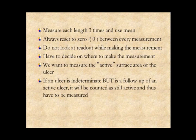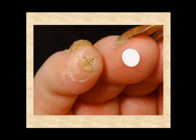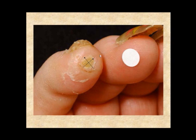Measure each length three times and use the mean of the measurements. Always reset to zero between each measurement. Do not look at the readout while making the measurements. You have to decide where to make the measurement — what we want to do is measure the active surface area of the ulcer. If the ulcer is indeterminate but is a follow-up of an active ulcer, in most studies it will still be counted as an active ulcer until it has healed, and thus has to be measured. So for an indeterminate ulcer with depth but covered with crust, you measure from one end of the crust surface to the other, and then perpendicular to that at the midpoint. Each of these measurements should be performed three times, and in the end the average of the measurements will be used.